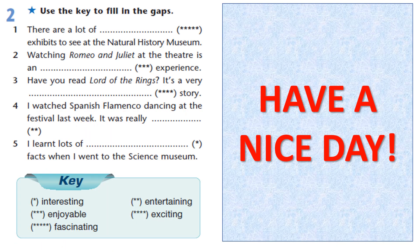Теперь упражнение номер два. Use a key to fill in the gaps. Нужно использовать вот ключи, которые даются здесь. Например, одна звёздочка — это где у нас? Одна звёздочка. Значит, пятое предложение: 'I learned lots of interesting facts when I went to the science museum.' Примерно так, используя прилагательные, пишем данное упражнение.